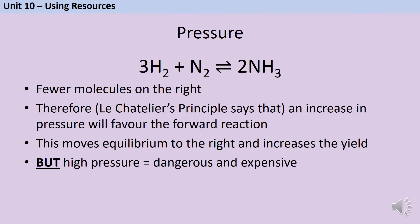Looking at the equation for the Haber process, there are fewer molecules on the right-hand side (products) than on the left (reactants). There are two ammonia molecules compared to three hydrogen and one nitrogen — four in total on the left. So if I increase the pressure, the lower-pressure side is favoured, which favours the forward reaction and moves equilibrium to the right, making more ammonia. However, the higher the pressure, the more expensive and dangerous it becomes, so 200 atmospheres is chosen as a safe and cost-effective compromise.